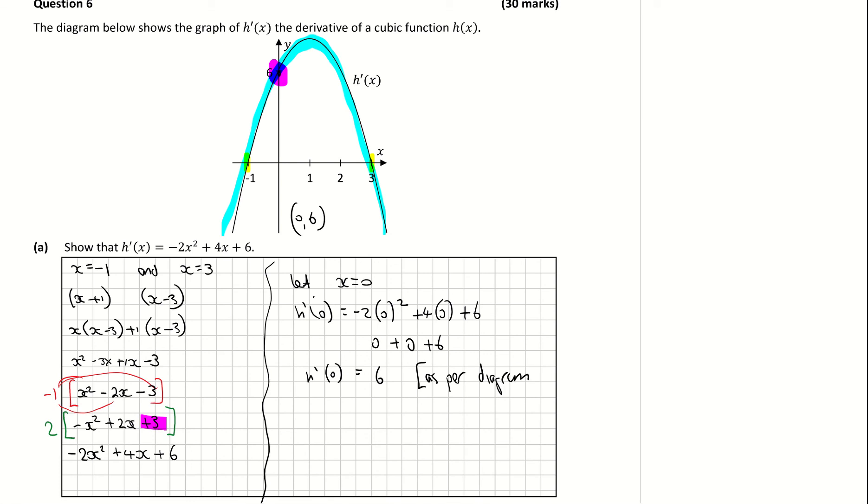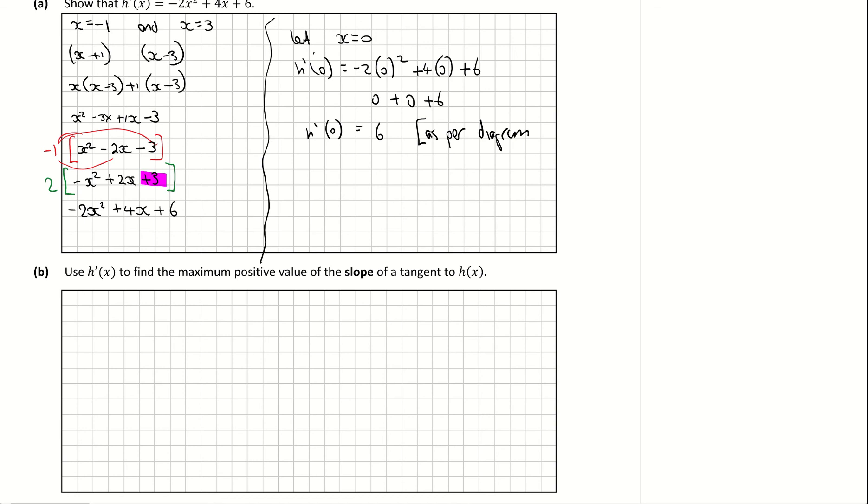Scrolling down now to part B. Part B, using h'(x) to find the maximum positive value of the slope of the tangent to h(x). Now remember that when they give us h'(x), the derivative of the function, which is -2x² + 4x + 6, we basically have a formula for the general slope of my cubic function.